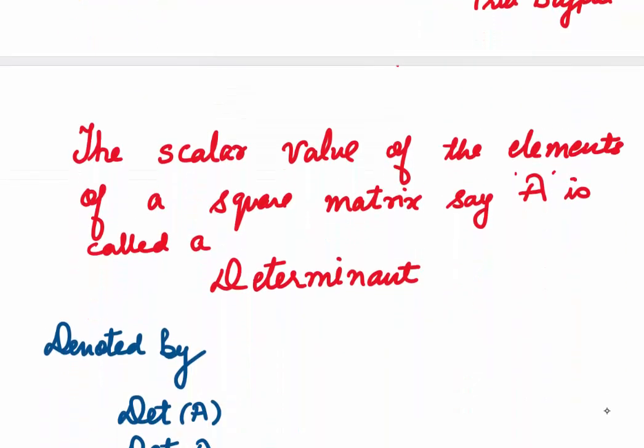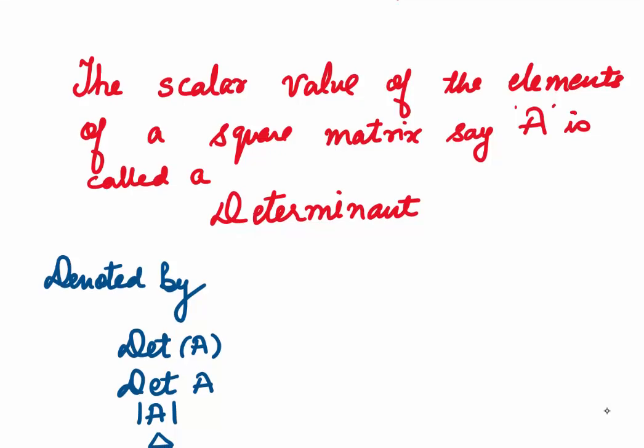So let's begin. We will start by what determinants are. Let us say that you are given a square matrix A and this matrix has some elements. If we put the elements inside these two bars, we say this is the determinant of the matrix A. The difference between a matrix and a determinant is that determinants have a value, whereas matrices do not. Determinant is nothing but a scalar value of the elements of a square matrix A.